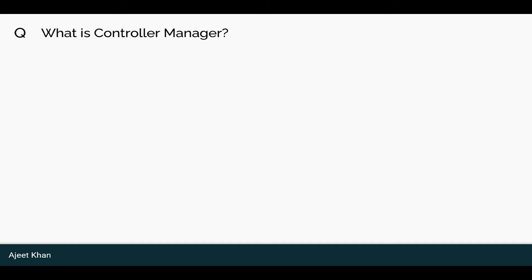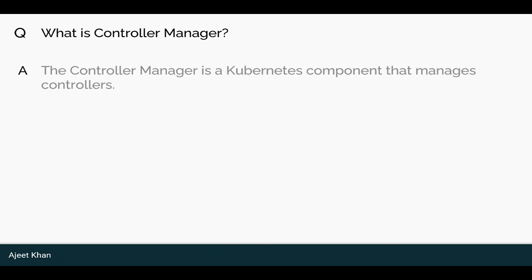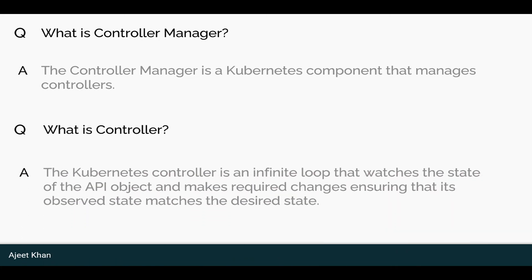What is the Controller Manager? The Controller Manager is a Kubernetes component that manages controllers. What is a Controller? The Kubernetes Controller is an infinite loop that watches the state of the API object and makes required changes, ensuring that its observed state matches the desired state.